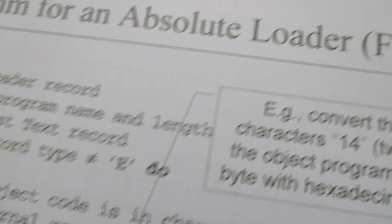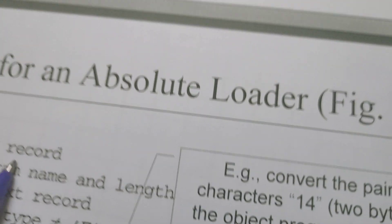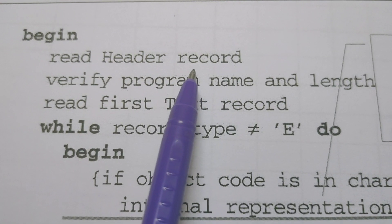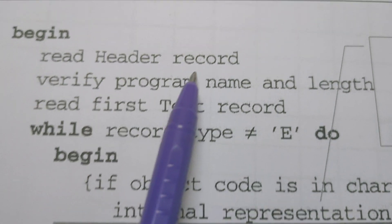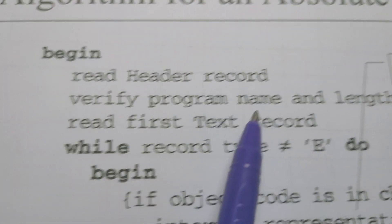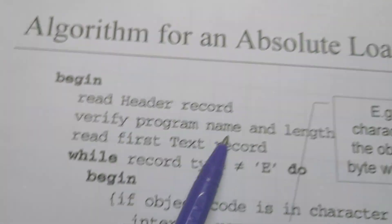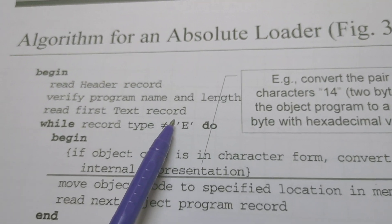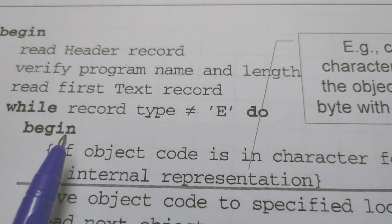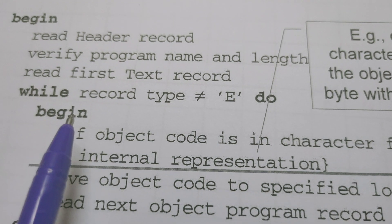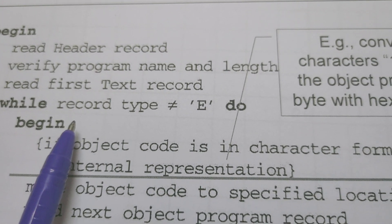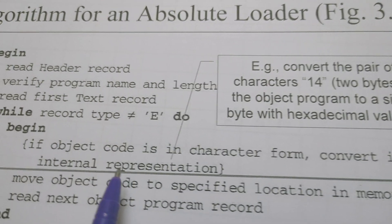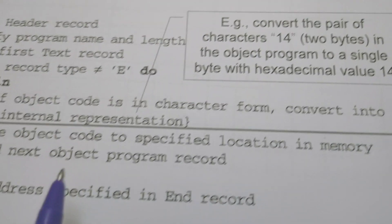The absolute loader reads the header record to learn the starting address, name of the program, and length of the program. It verifies the program name and length. Then it reads the first text record and starts loading the object code into memory. It continues loading until the record type is equal to E (end record).